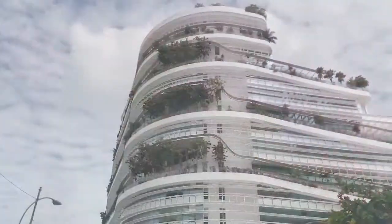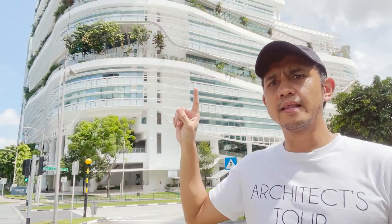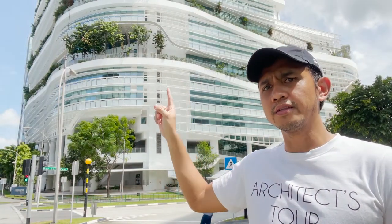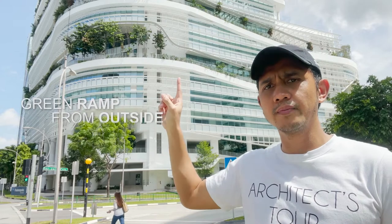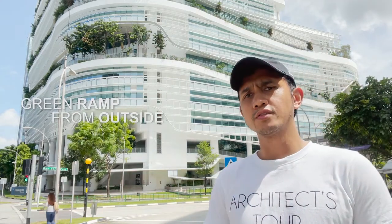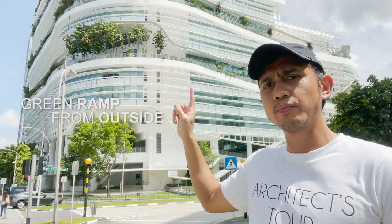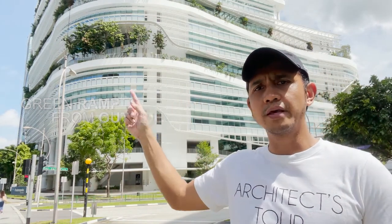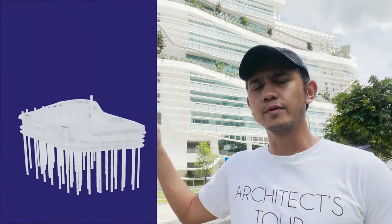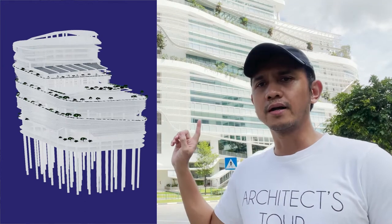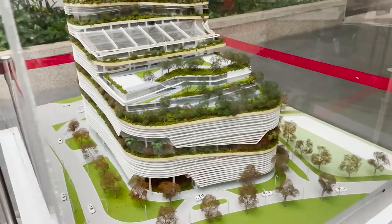For today, we can see these landscape areas and greeneries that is called green ramp of Solaris building. The total length of that ramp is 1.5 kilometers, encircling the perimeter of the building going up from the ground floor up to the roof deck. That is one of the striking features of this building.